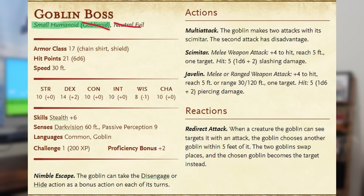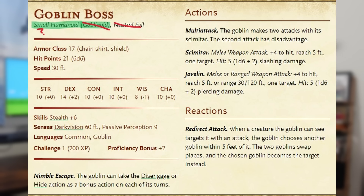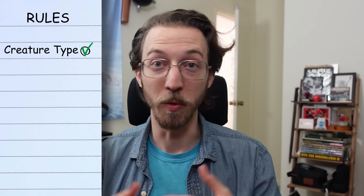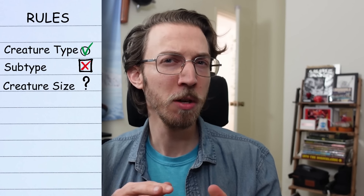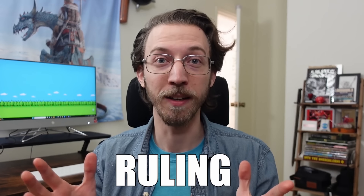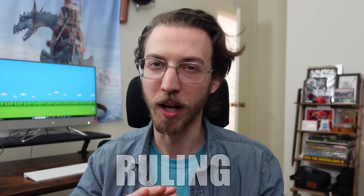On the other hand, humanoid is definitely important for how a lot of 5e spells work. And small won't come into play often, but since other sizes like large and huge are more consequential in 5e, I'm on the fence about that one. So that mini thought experiment was about what rules are necessary on a stat block, what rules are not necessary, and what rules could be left up to the game master as a ruling — a decision made by the referee, not by the designers.